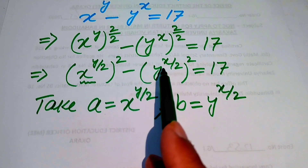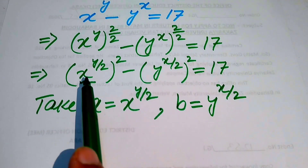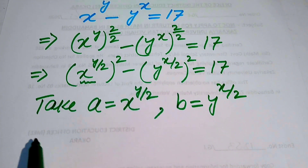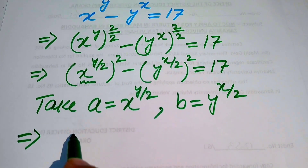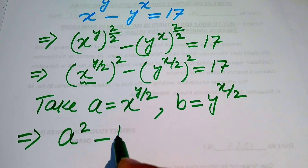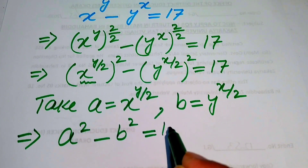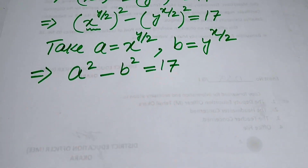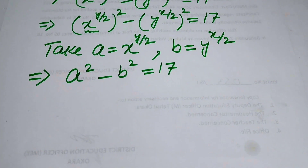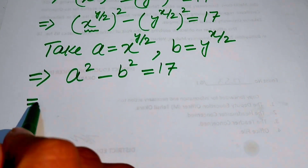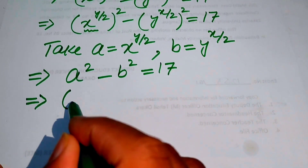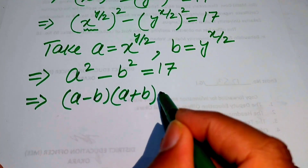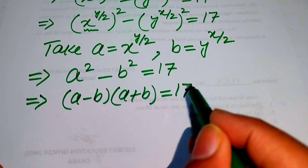We take y to the power of x over 2 equals b, and x to the power of y over 2 equals a. Substituting these into the equation gives a squared minus b squared equals 17. Using the algebraic identity, a squared minus b squared equals a minus b times a plus b, so we have a minus b times a plus b equals 17.